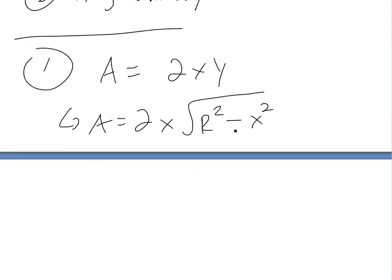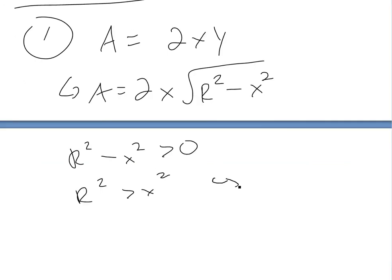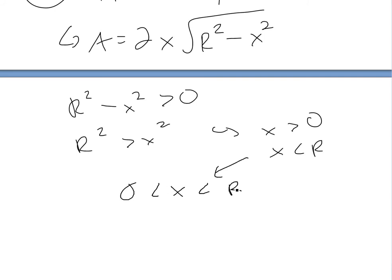First we have to find the domain. The square root can't be less than zero, so r² − x² ≥ 0, which means x² ≤ r². So x must be greater than 0 and less than or equal to r, because you can't have a negative radius and x can't exceed r without producing a negative under the square root.